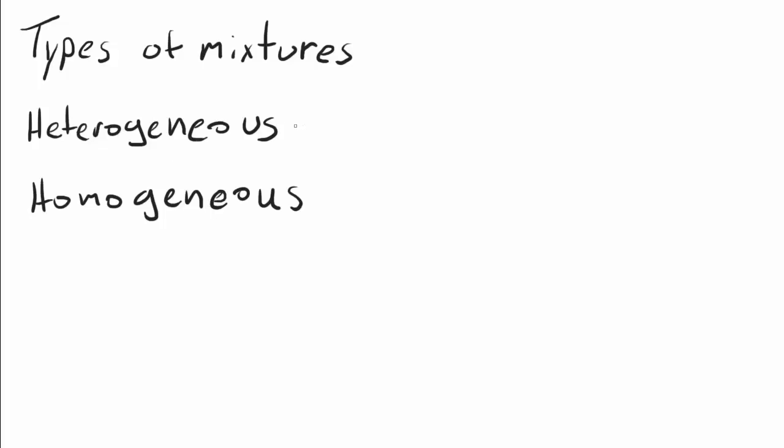And what that means for us in chemistry in terms of these mixtures is that if a mixture is heterogeneous, it has different parts that you can see. If you can see or tell that there are different parts to the mixture, it's a heterogeneous mixture. And if the mixture all looks the same, then it's a homogeneous mixture.